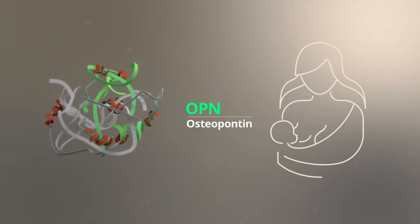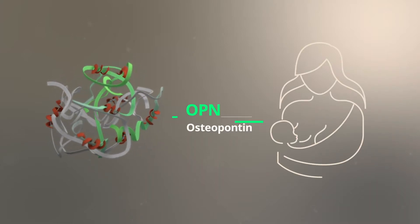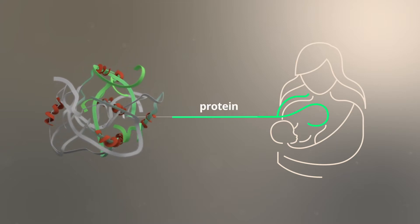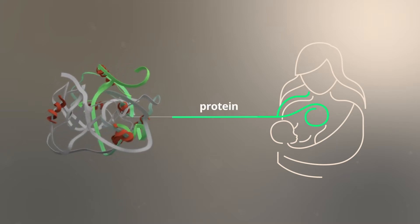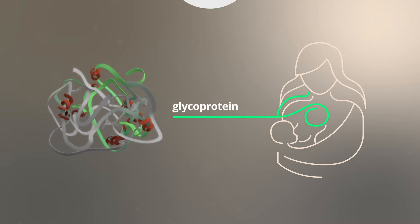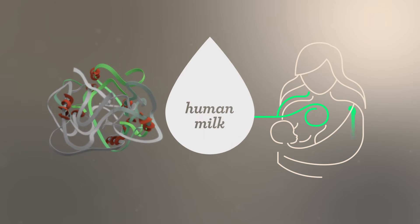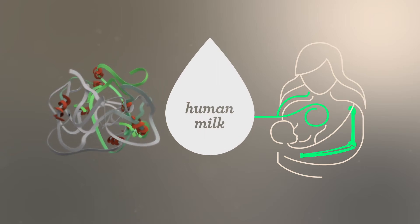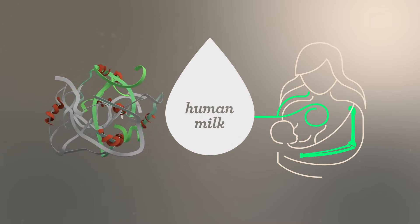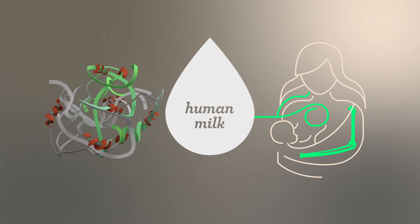Osteopontin, or OPN, is a protein — specifically a phosphorylated glycoprotein — that is found in body tissues, including bone and body fluids, such as human milk.